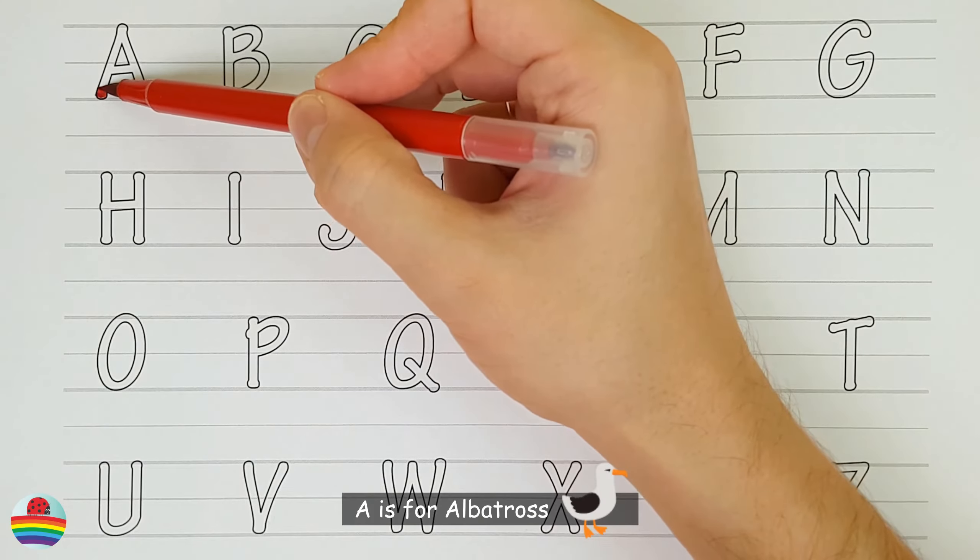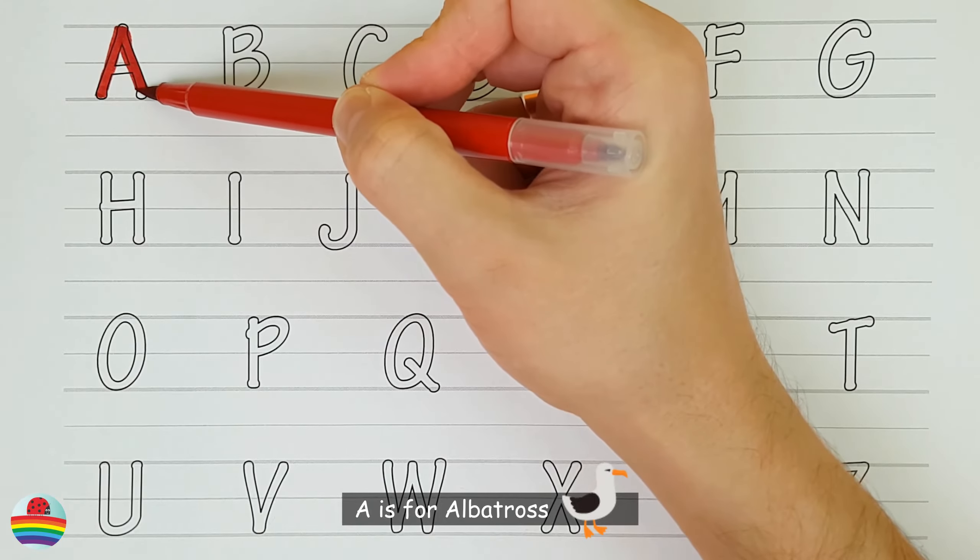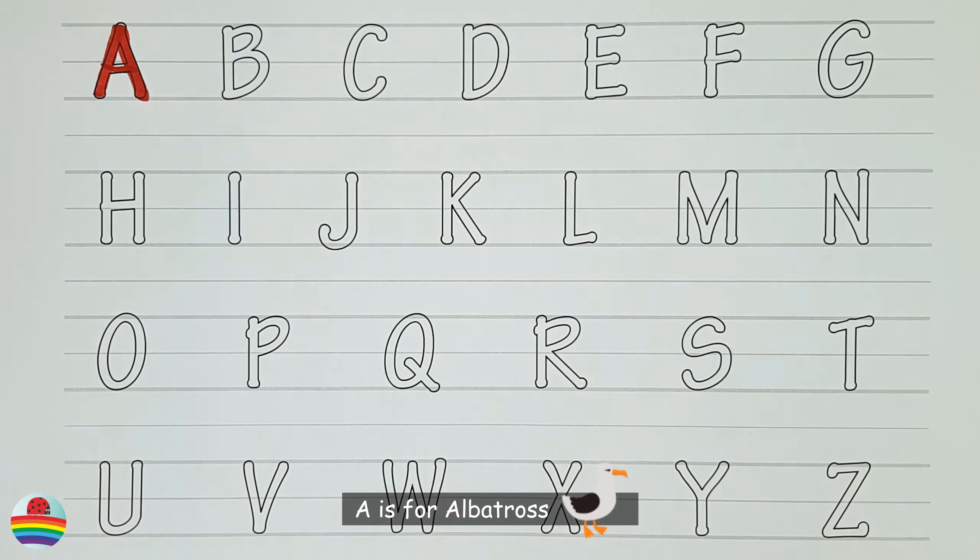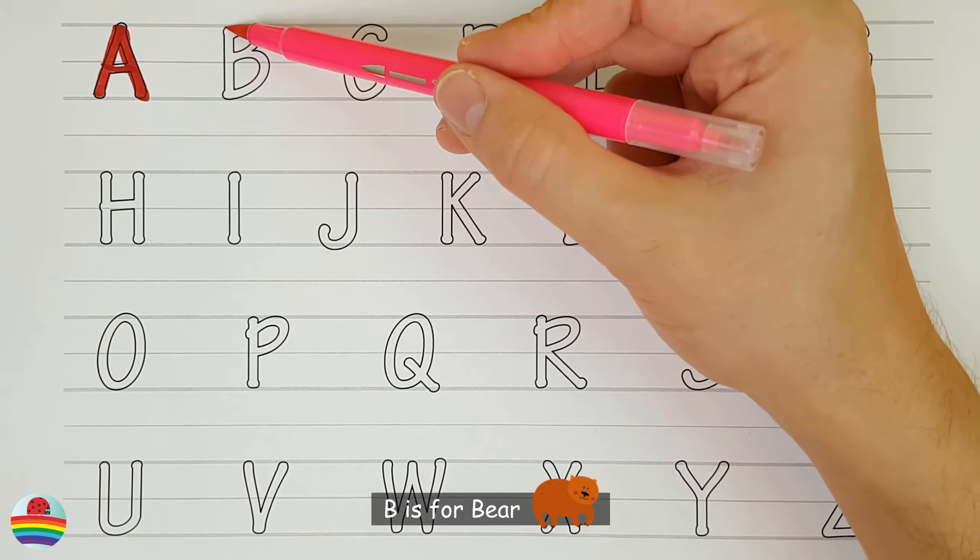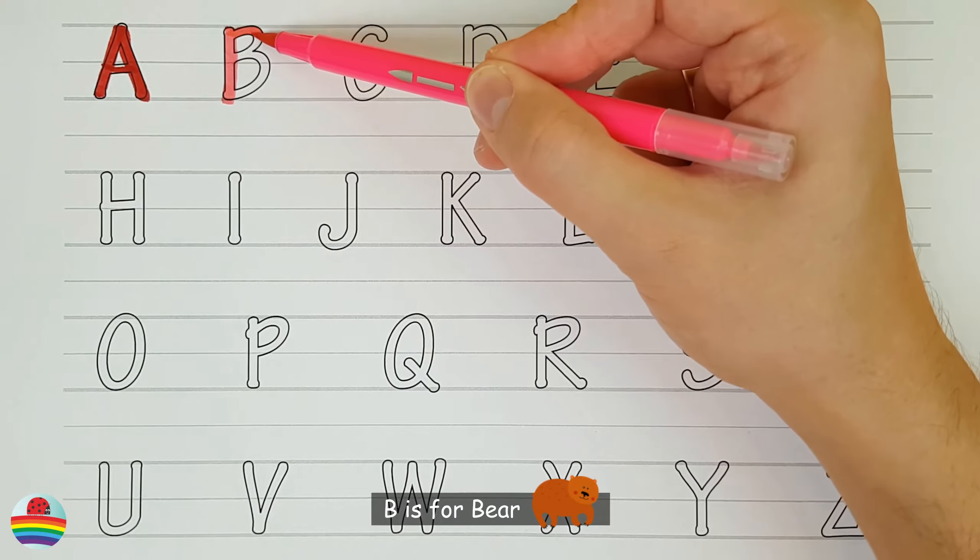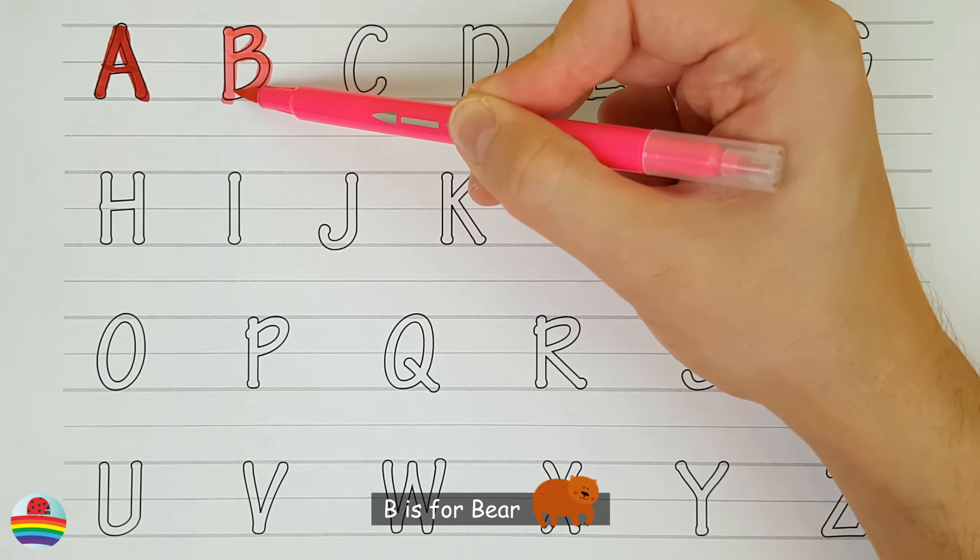A. A is for albatross. A. B. B is for bear. B.